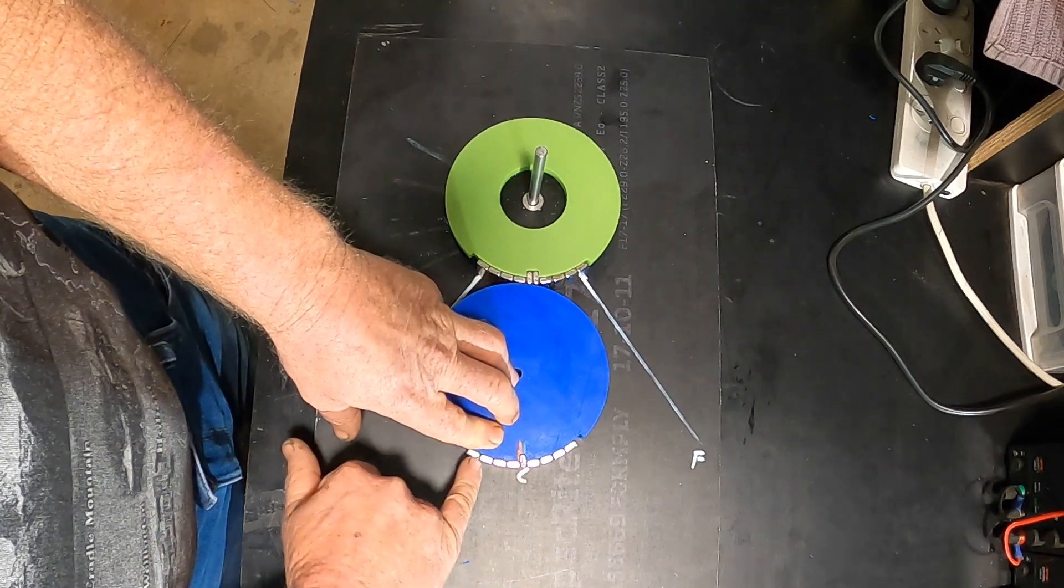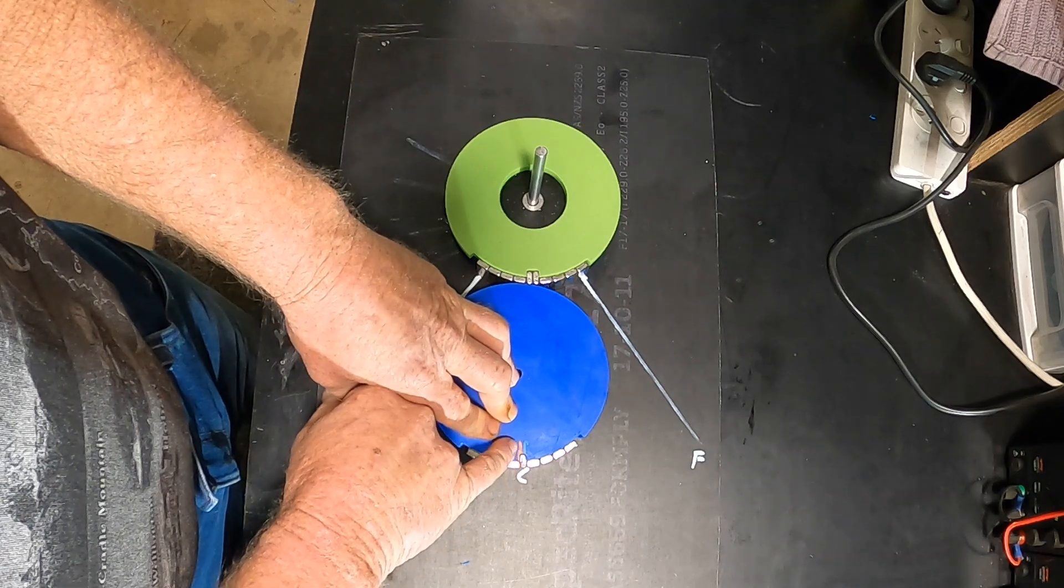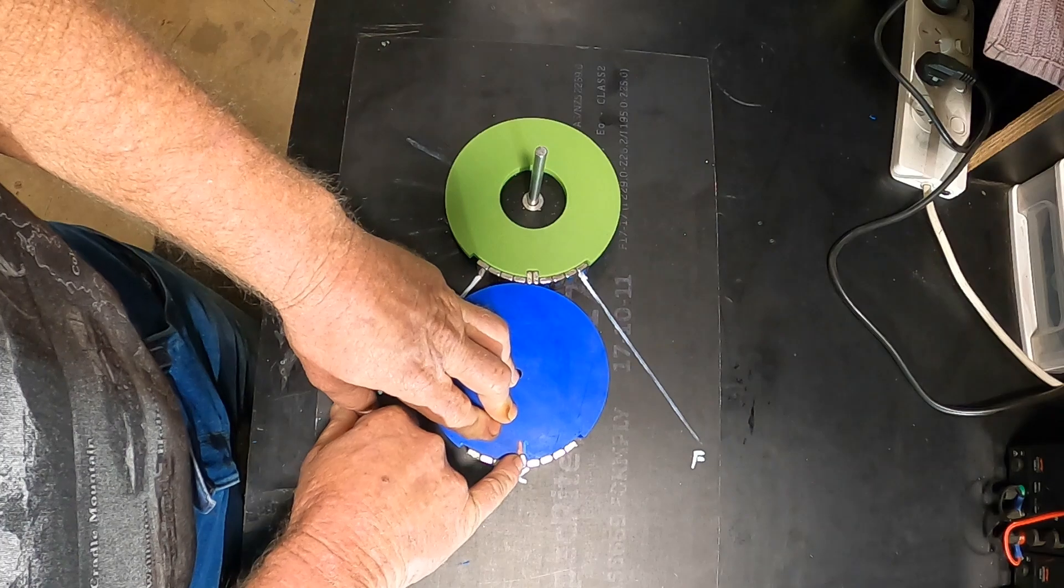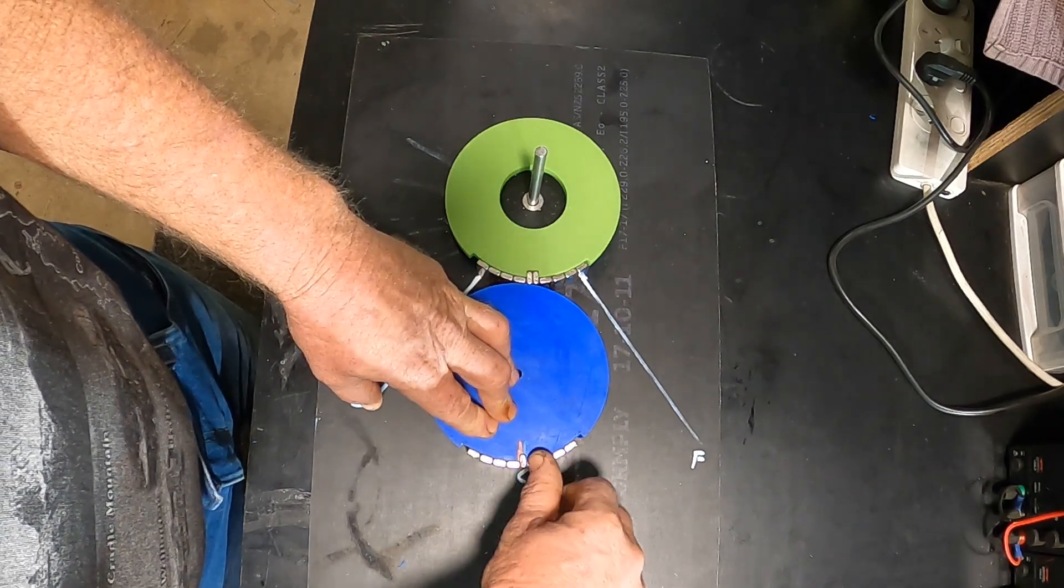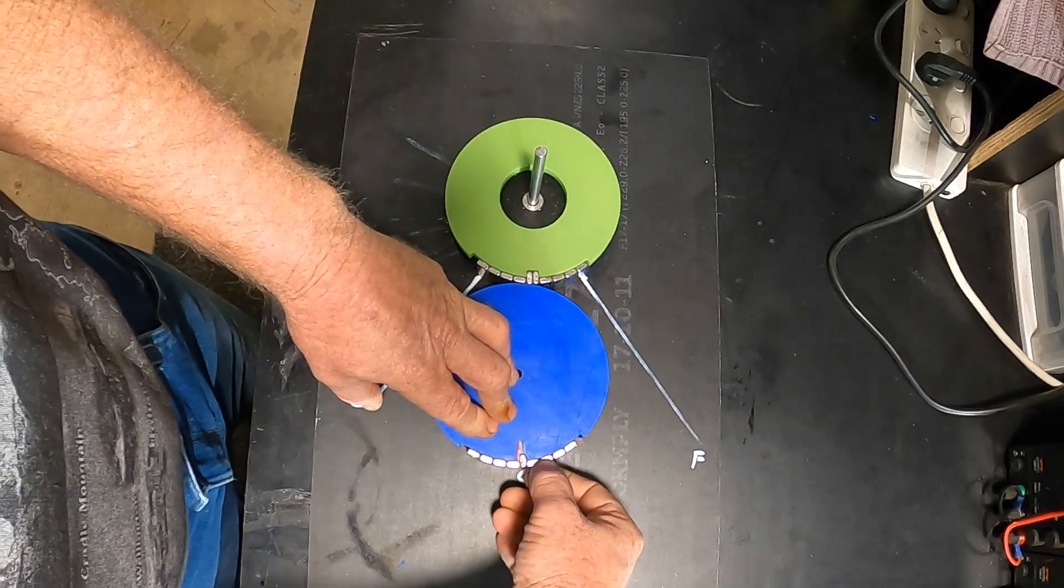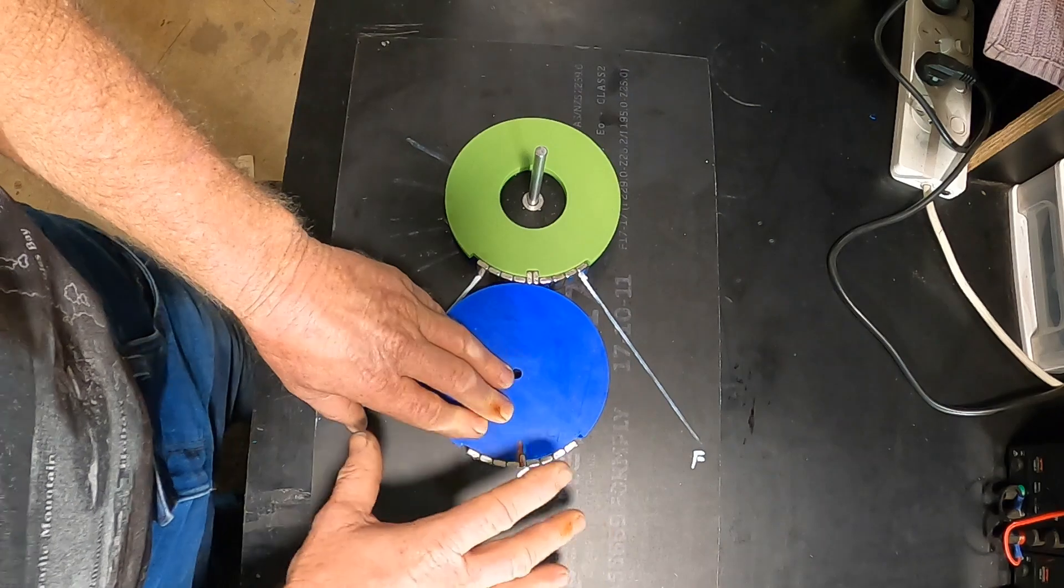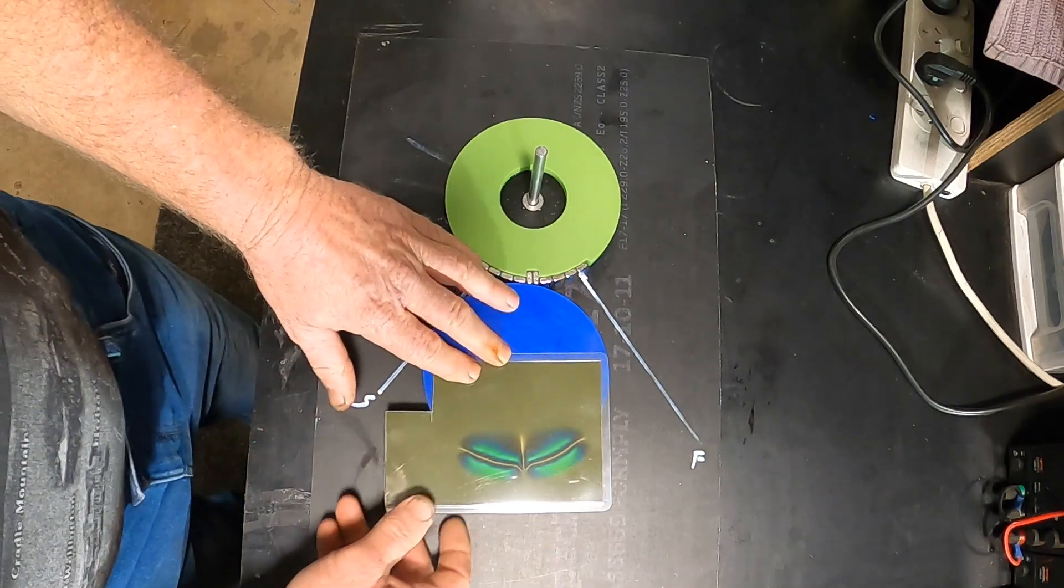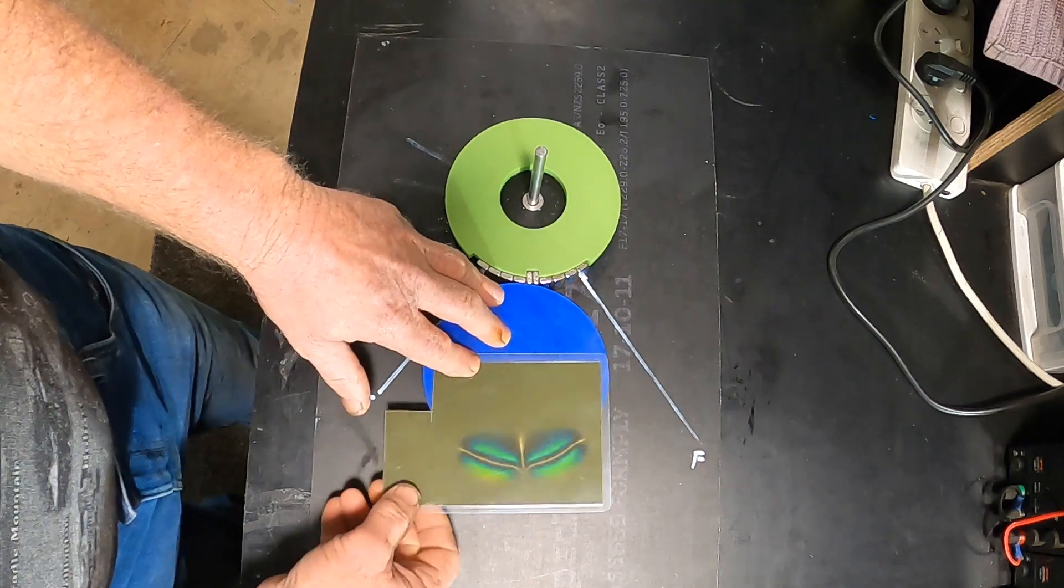We have all south pointing out here and all north pointing out there. Our vertical or neutralizing magnet in the center, with north on this side and south on that side, pulls this south field in tight and this north field in tight, giving us a void in the middle. That was our first success, as you can see our field void here.